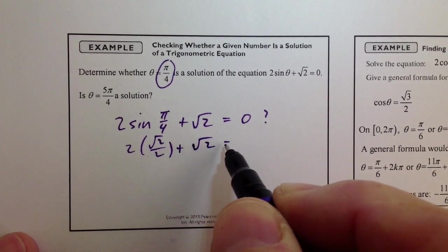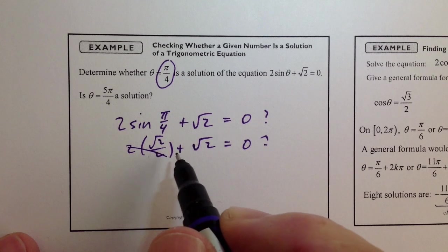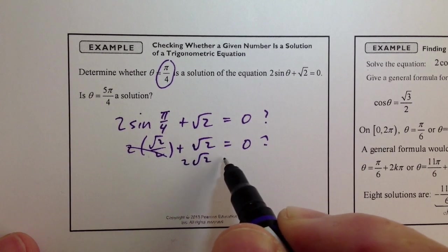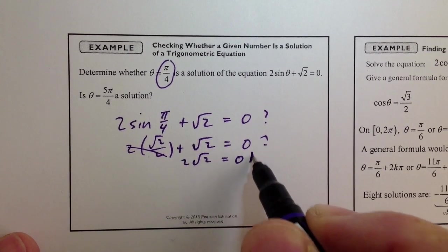plus radical 2, does that equal 0? And as you can see, radical 2 plus radical 2 is equal to 2 radical 2, and that would be no.